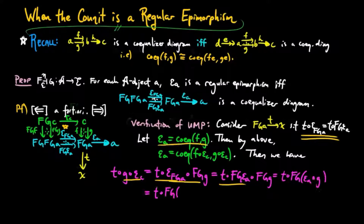And we see this is equal to T FG epsilon A FGF, since epsilon A is a co-equalizer of F and G. But FG epsilon A FGF is equal to F epsilon C, so we obtain T F epsilon C.